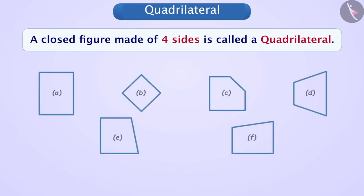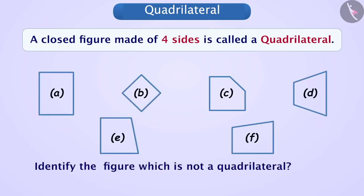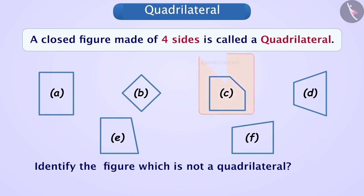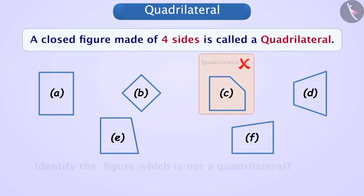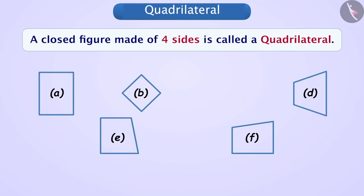Observe the given figures. Among these, one figure is not a quadrilateral. Can you tell me which one? Think for a while. One of the figures is not a quadrilateral, so let us ignore it.